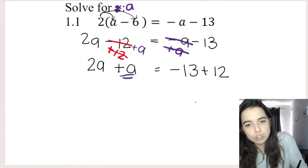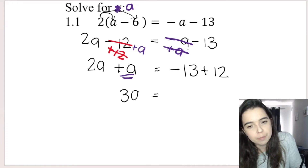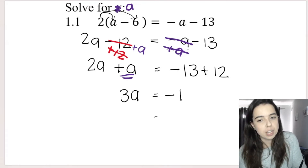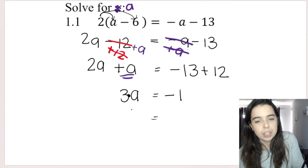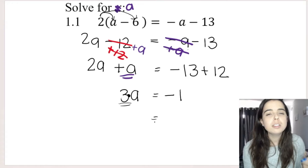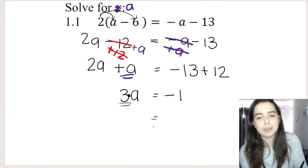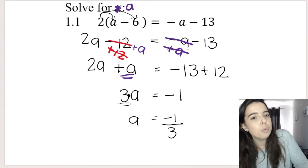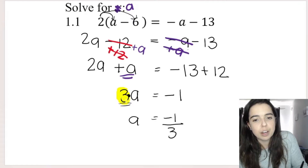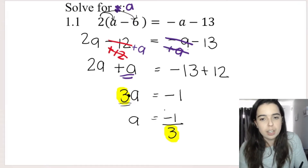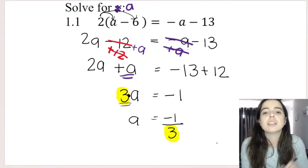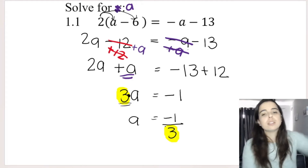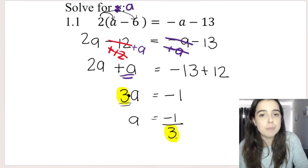So I've got 2a plus a, which is 3a. I've got negative 13 plus 12, which is negative 1. My last step: I've got multiply by 3 on this side. I want to get rid of the 3 — the opposite of times 3 is divide by 3. A great way to remember it: the number next to the variable always goes to the bottom. So the opposite of times 3 is divide by 3.